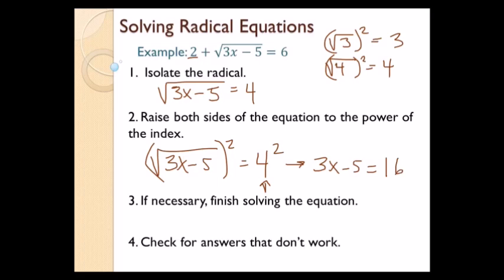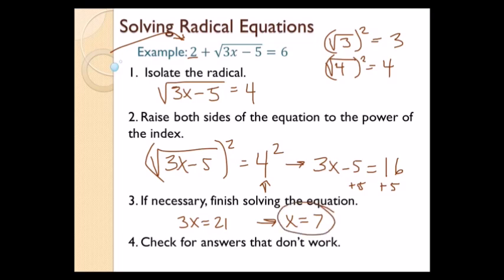Step number 3, finish solving the equation. So I'm going to add 5 to both sides. So I have 3x equals 21, and divided by 3, x equals 7. Step number 4, check for answers that don't work. So I want to just check it, make sure it works. 3 times 7 — putting it back into the original equation — 3 times 7 is 21, 21 minus 5 is 16, square root of 16 is 4, 2 plus 4 is 6. It works. There's my final answer.